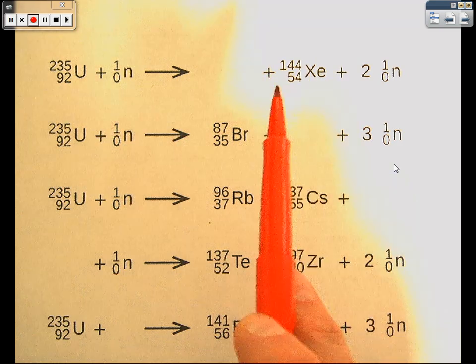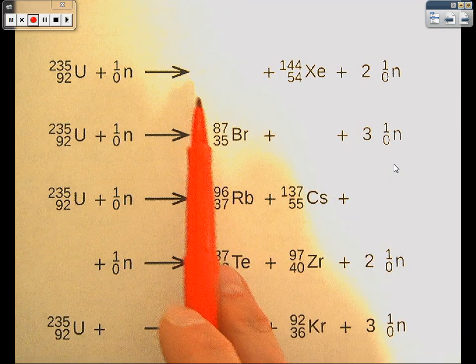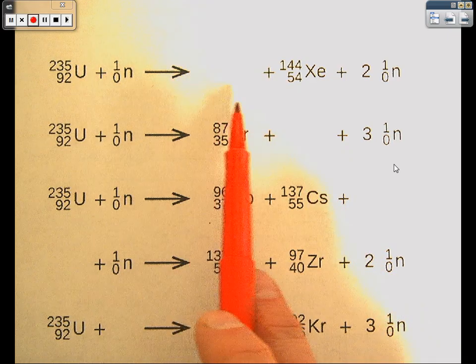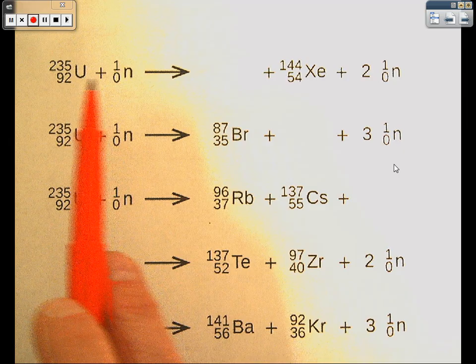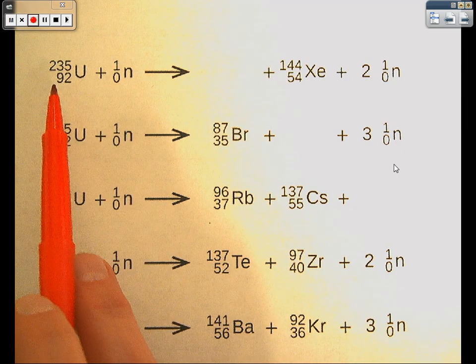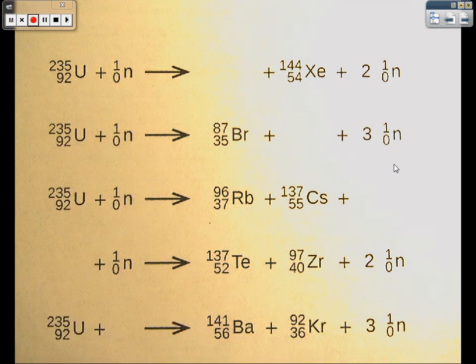What we're going to do is start with the side that's complete. Notice we're missing a substance here. This is what we're trying to find, that missing part. We're going to start over here with the uranium-235 and the neutron, ¹₀n being the abbreviation for neutron.